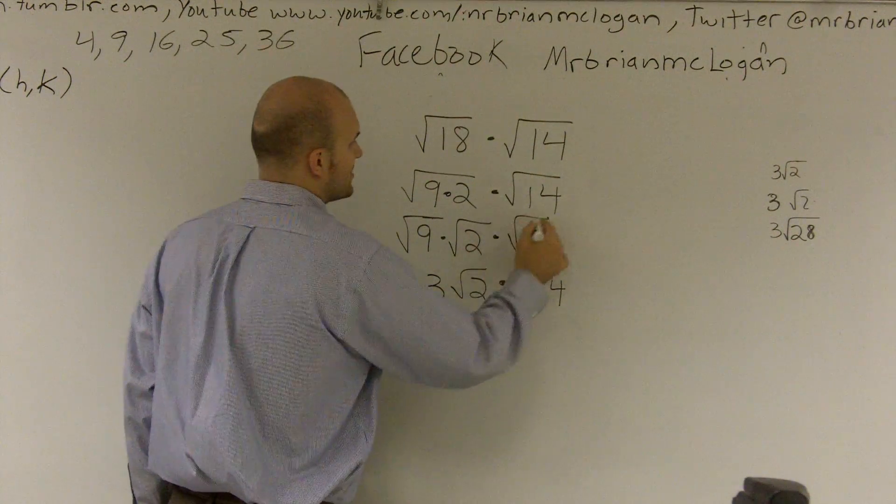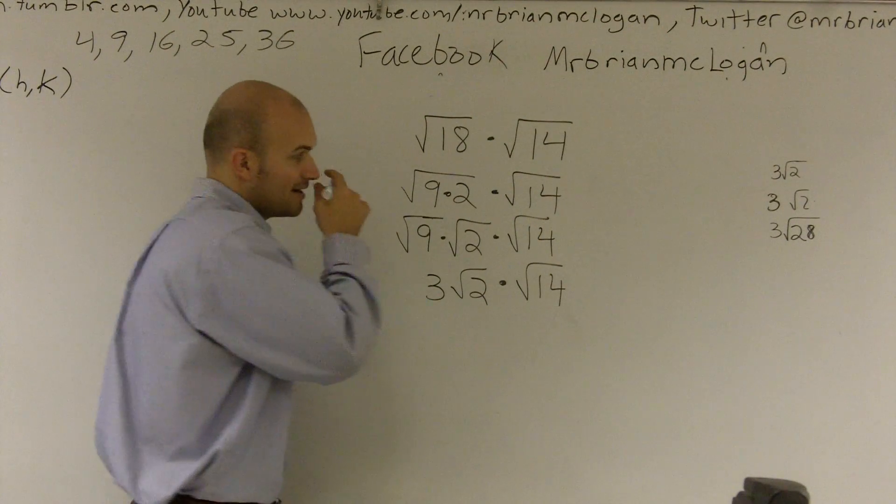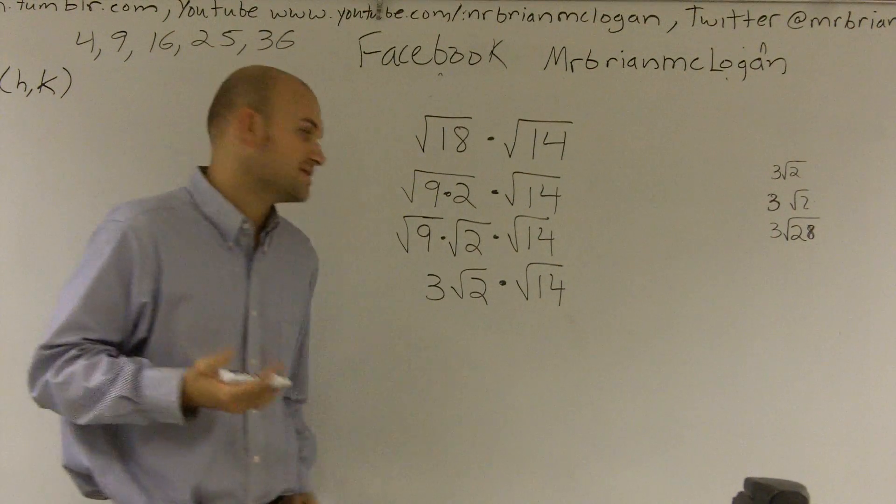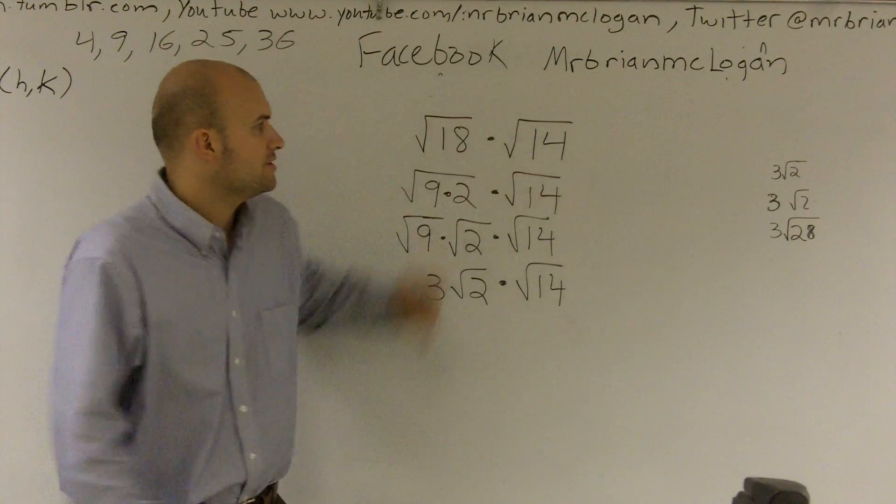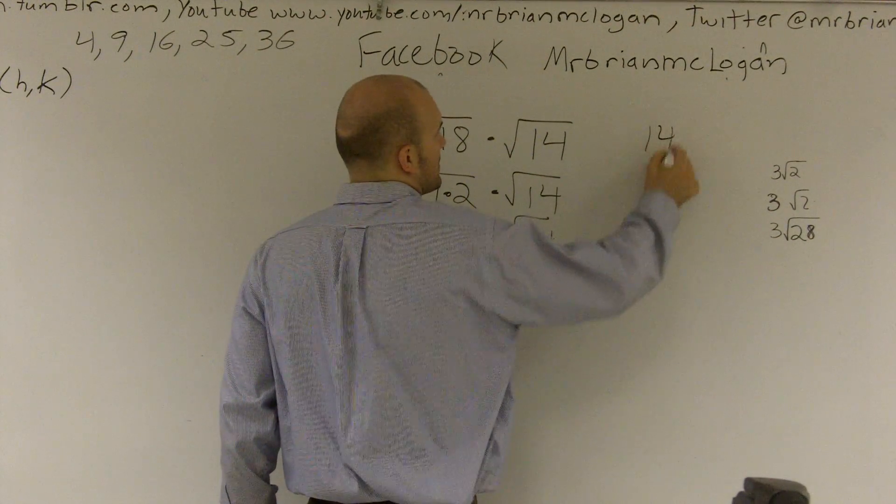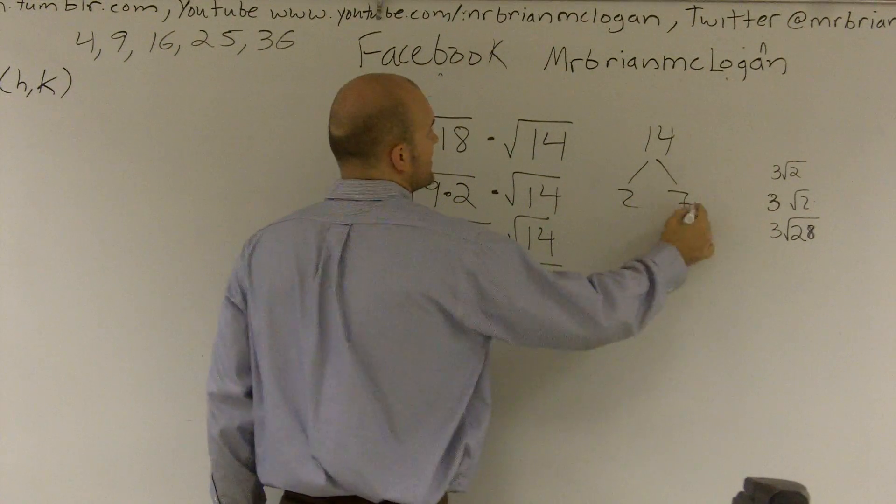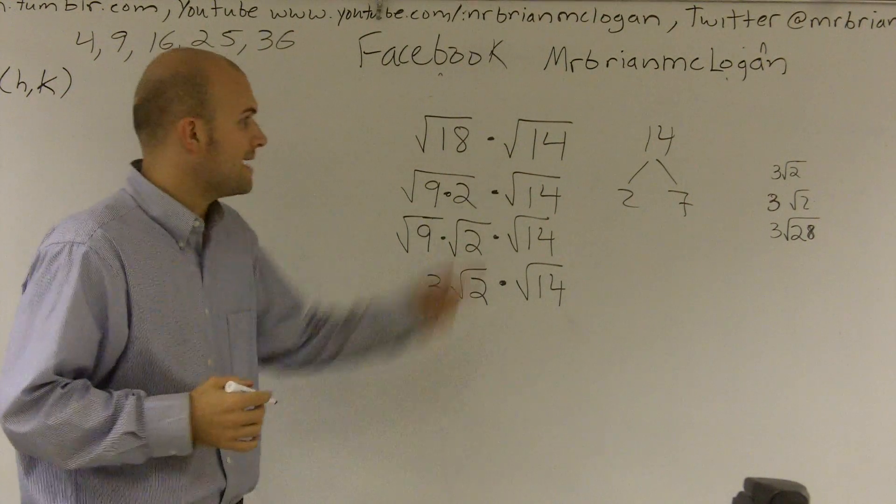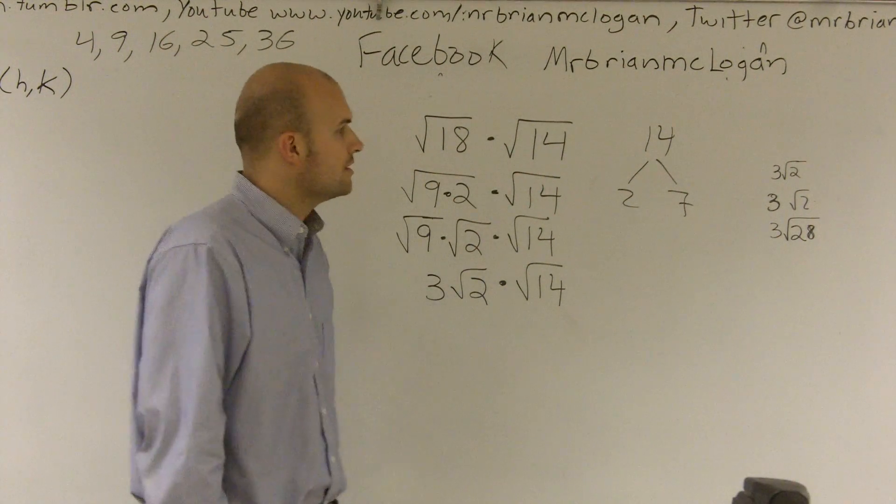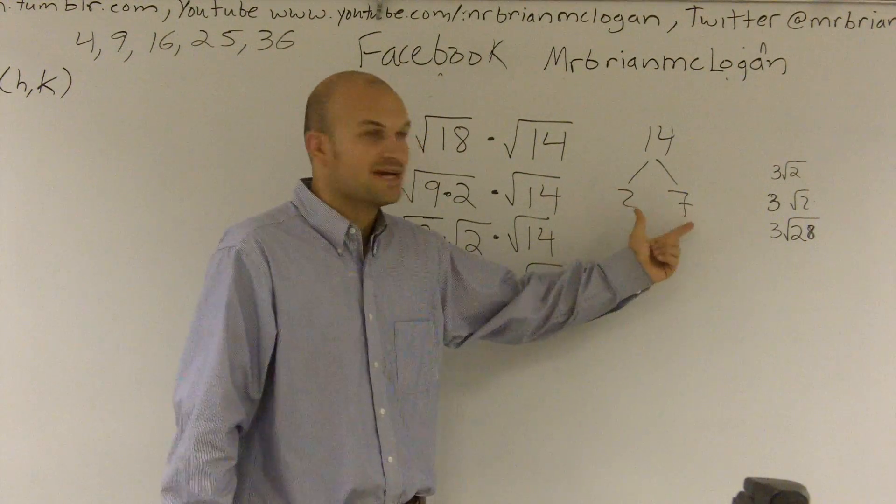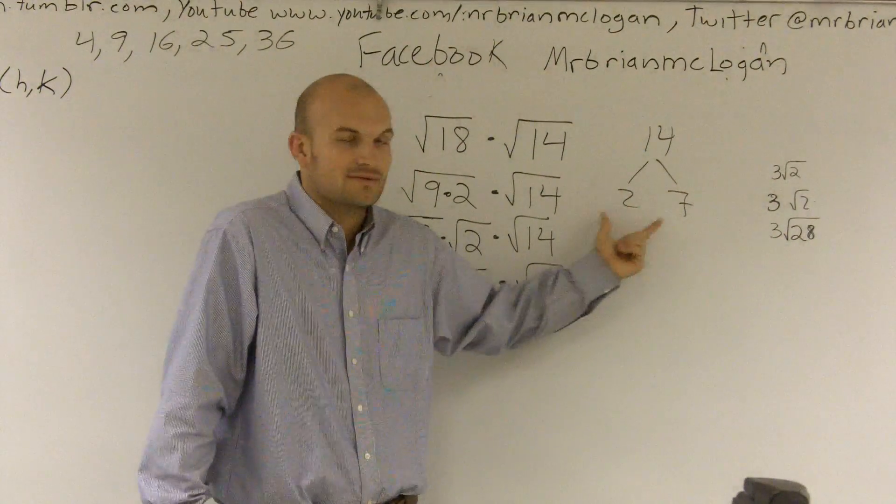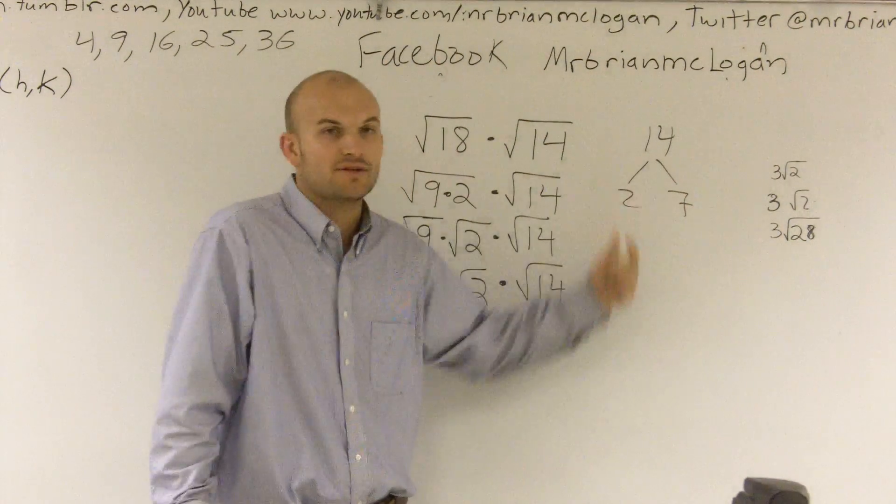Now I haven't done anything with square root of 14 because I intrinsically already know that you can't reduce the square root of 14. There is no number, if you're going to factor this, 2, 7, those are both prime numbers. 14 is not a prime number, but 2 and 7 are both prime numbers, so therefore there's nothing else you can factor that for.